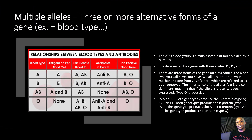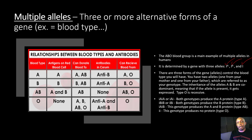Now let's talk about multiple alleles — this is where there are three or more alternative forms of a gene. A great example is blood type. The ABO blood group is determined by a gene with three alleles: A, B, and I, which leads to blood type O. You have two alleles — one from your mom and one from your dad — referred to as your genotype. The inheritance of alleles A and B are co-dominant, meaning the allele present is going to be expressed, and type O is recessive.